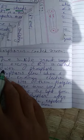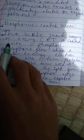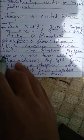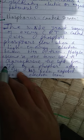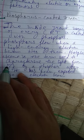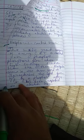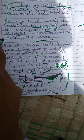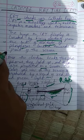The inside front surface of every CRT is coated with phosphorus. The phosphorus glows when a high-energy electron beam hits it. Phosphorescence is the term used to characterize the light given off by the phosphorus after it has been exposed to an electron beam. Hope you liked this topic on CRT — thanks for watching this video.